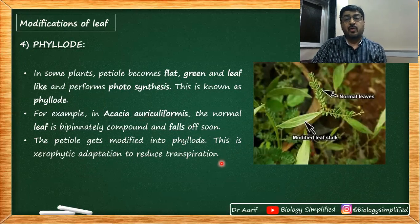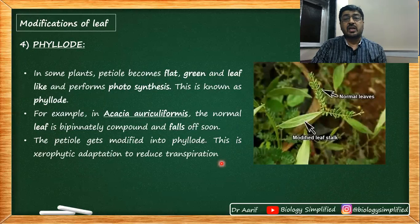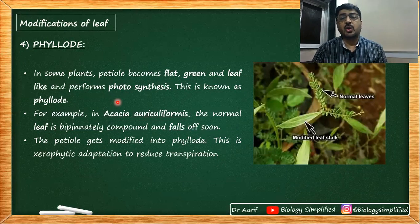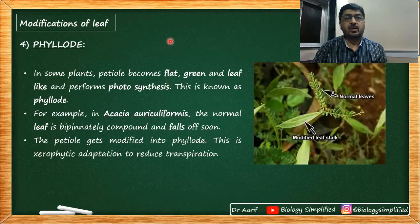So four modifications of leaf: the first was leaf spine, the second was leaf tendril, the third was leaf hook, and the fourth was phyllode. This finishes our entire discussion on the topic of leaf. Thank you all.